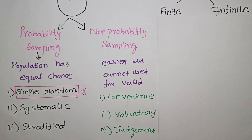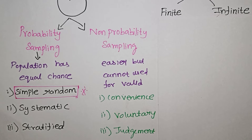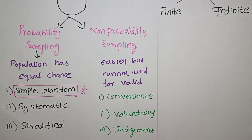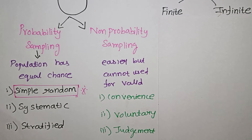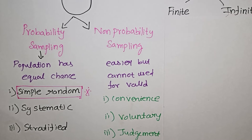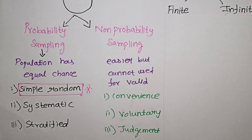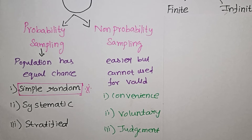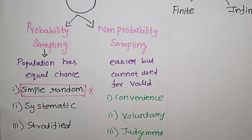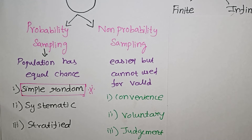Systematic sampling works like this: for example, you have 1,000 employees and all names are listed in alphabetical order with role numbers. You might select role numbers 4, 14, 24 — with a fixed interval gap. From 100 numbers, you select based on that interval.